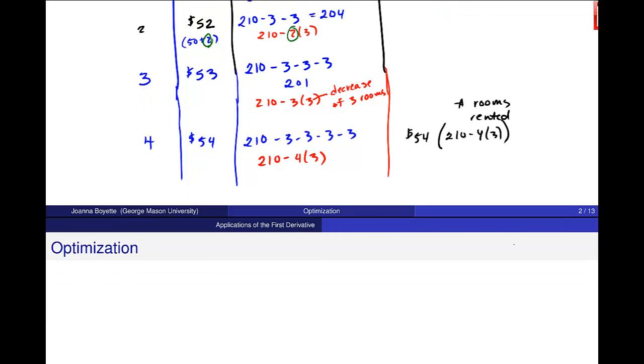So let's go down. So when I, just in general, when I raise the rate n times, this price is 50 plus n. If I raise it 5 times, it should be 55. If I raise it 6 times, so that's my price. And then I should get this 210 minus n times 3. And then in that case, revenue should be this price times rooms rented.